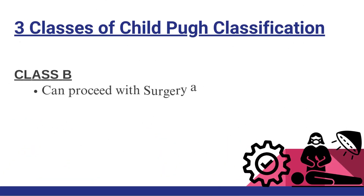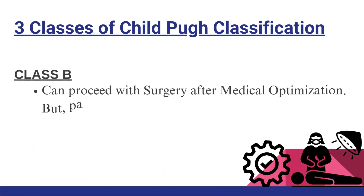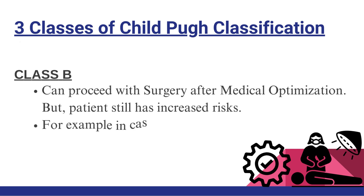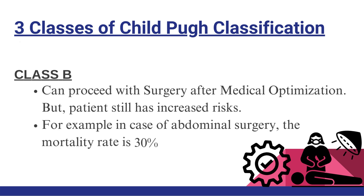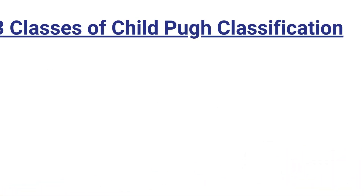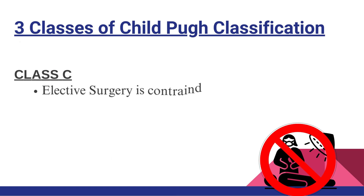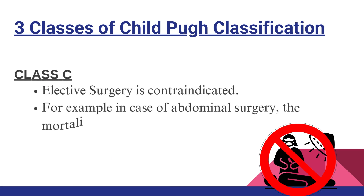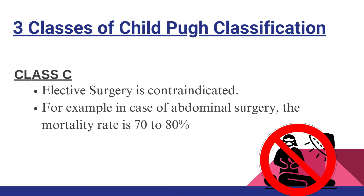Class B: the patient can proceed with surgery after medical optimization, but still has increased risks. For example, in case of abdominal surgery, the mortality rate is 30%. Class C: elective surgery is contraindicated. For example, in case of abdominal surgery, the mortality rate is 70 to 80%.